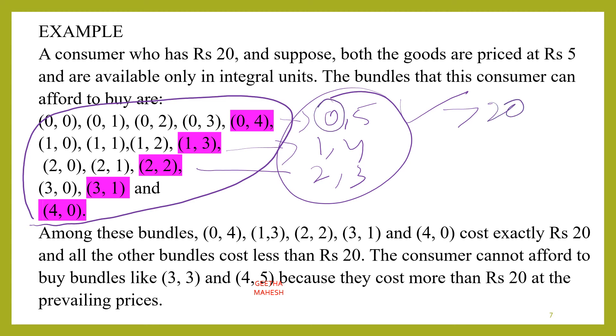For example, if you take zero units, 5 into 0 gives you zero. But 5 items into 5 rupees gives you 25. Since 25 is greater than 20, this combination is unattainable. The consumer cannot afford to buy bundles like (3,3) or (4,5) because they cost more than 20 rupees at the prevailing price.